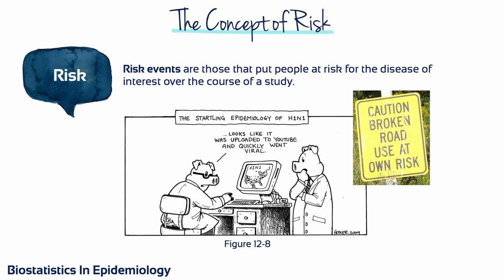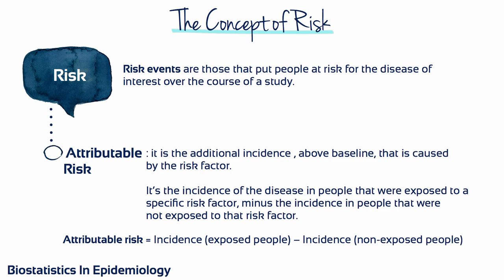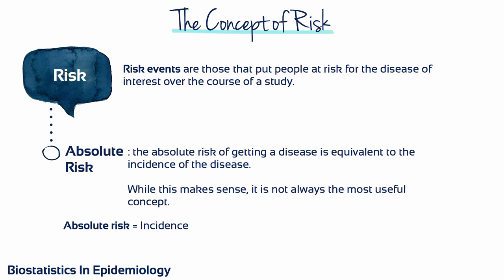Certain events or factors put people at risk for the disease of interest over the course of a study. Attributable risk is the additional incidence above baseline that is caused by the risk factor or event. The absolute risk of getting a disease is equivalent to the incidence of the disease. While this makes sense, it is not always the most useful concept. Often what we want to know is the relative risk of a person or group getting the disease.